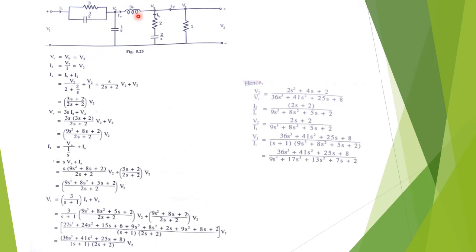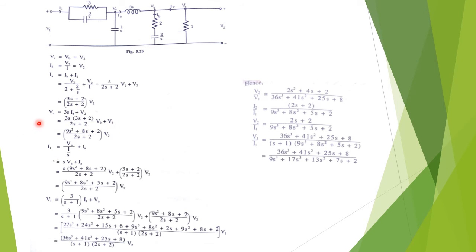So Ia = V2/(2 + 2/s) + V2, which simplifies to Ia = (3s + 2)/(2s + 2) · V2. Node voltage Va equals the voltage drop across impedance 3s plus Vb: Va = 3s · Ia + V2. Substituting the value of Ia, we get Va in terms of V2. Current I1 equals the current through branch (1/s) plus Ia: I1 = Va/(1/s) + Ia = s·Va + Ia. Substituting Va and Ia in terms of V2 gives I1 in terms of V2.